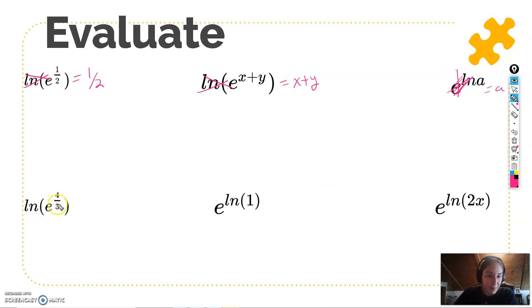ln of e to the 4 thirds, look, an inverse pair again. So that'll just be 4 thirds. What about e to the ln of 1? e to the ln, inverse pairs cancel out, so I'll just get 1. And same thing here.